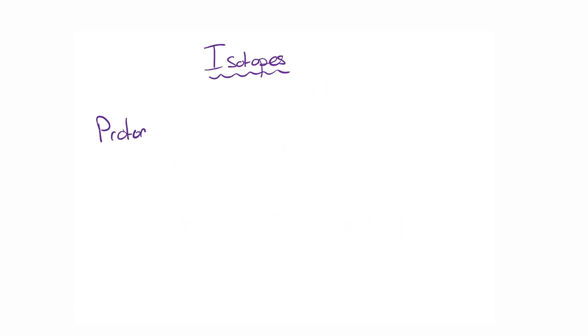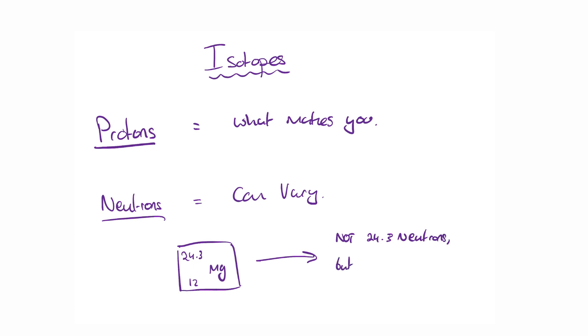Now this brings us on to something closely related to all of this. Isotopes. You see it's in fact the number of protons that determines what element you are, but the number of neutrons can actually vary and it does. This is very important because it's exactly how you end up with 24.3 being the relative atomic mass of magnesium. You obviously cannot have 0.3 of a neutron.